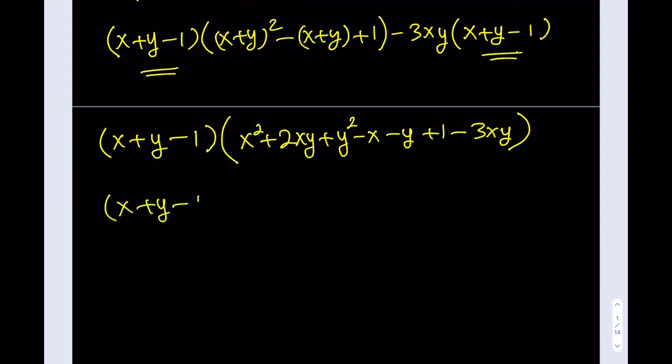So x plus y minus 1. We can actually write the result this way, since this is going to be the final answer. My original expression was x cubed plus 3xy plus y cubed minus 1, and that is equal to x plus y minus 1.